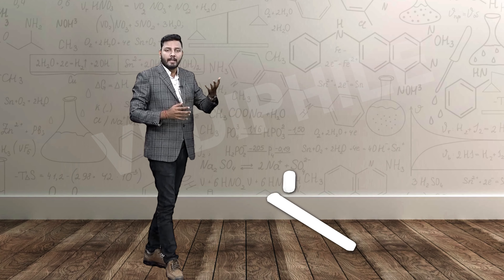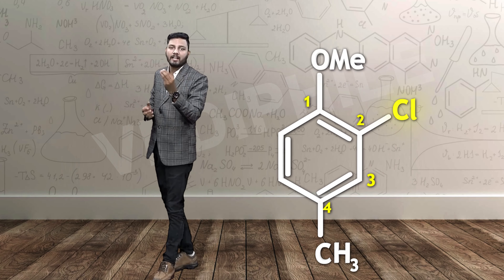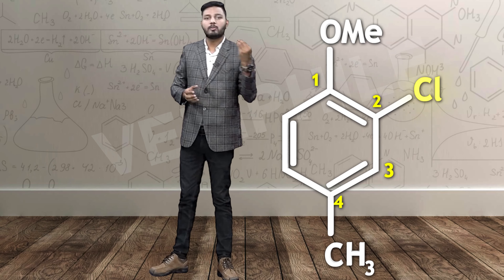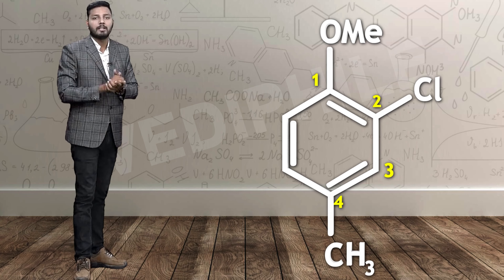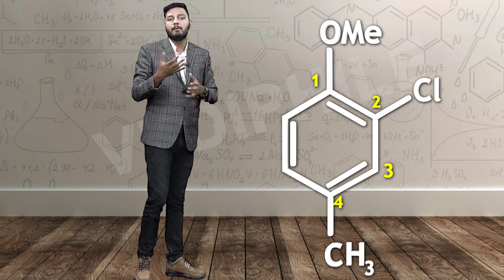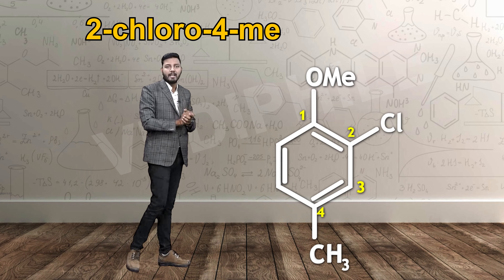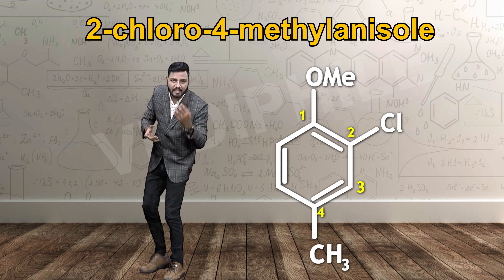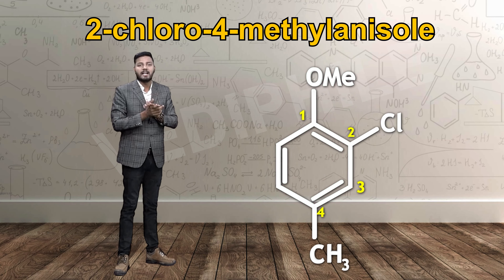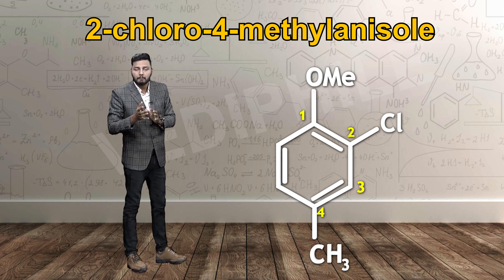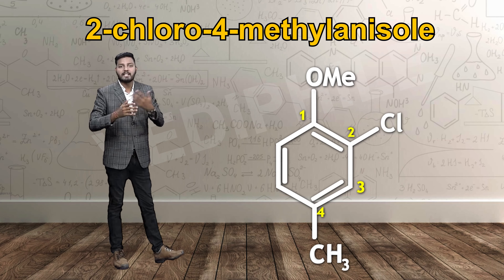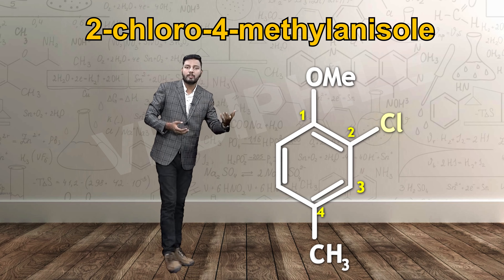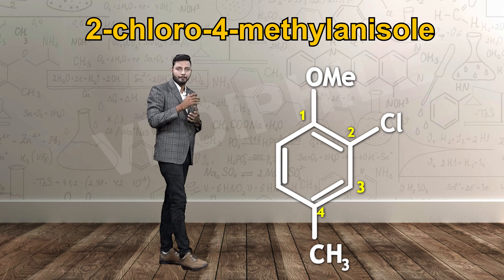In another example, benzene has an OMe, a chlorine, and a CH3 group. Giving OMe position 1 and chlorine position 2, we use anisole as the base compound — taking benzene with OMe together. The name could also be written using methoxybenzene, but here we take anisole as the base component. Chloro is placed before methyl because C comes before M alphabetically.